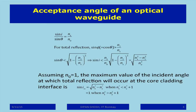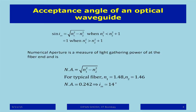This means cos theta should be greater than n2 over n1, which gives a relationship that sine i should be less than a certain value. Taking n0 equal to 1, the maximum angle of incidence at which total reflection occurs at the core-cladding interface is given by sine i_m equal to the square root of n1 squared minus n2 squared. This quantity, root of n1² minus n2², is called the numerical aperture.